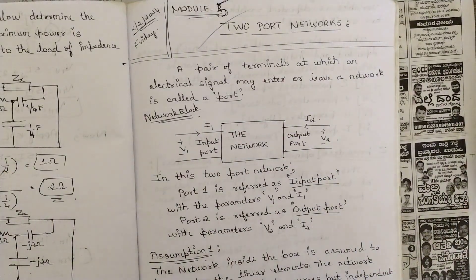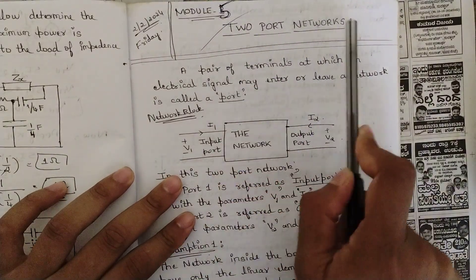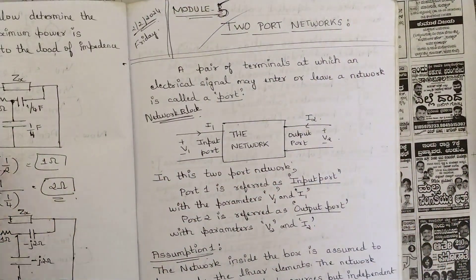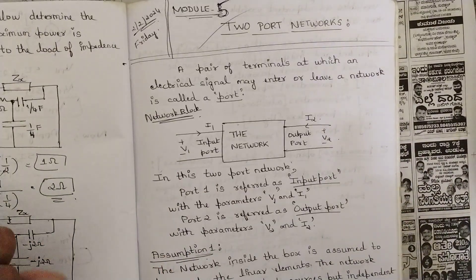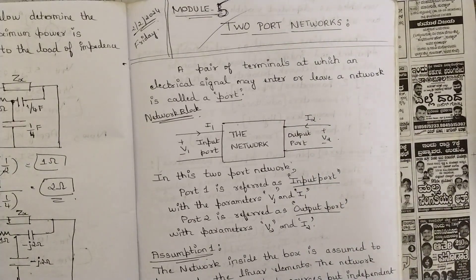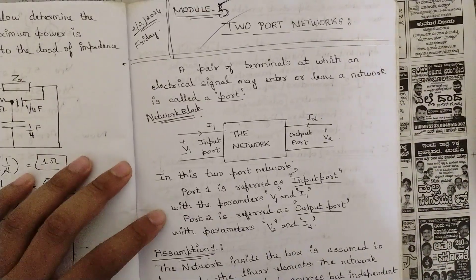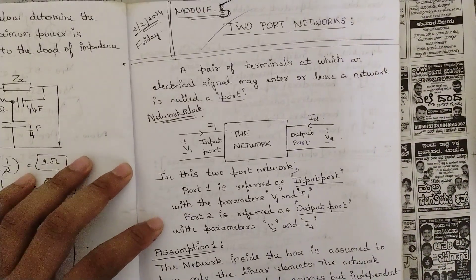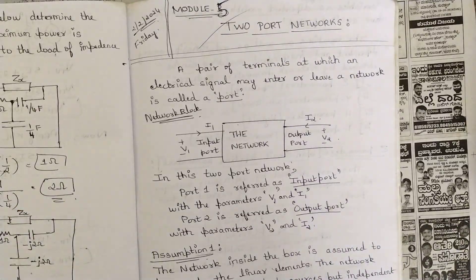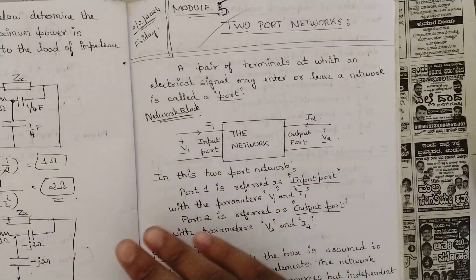This module — Module 5, two-port networks — would be a combination of everything we have discussed so far. You should be applying all those concepts here, and all the concepts should be interlinked. Especially mesh analysis is very important; if you know that, this module is very easy.